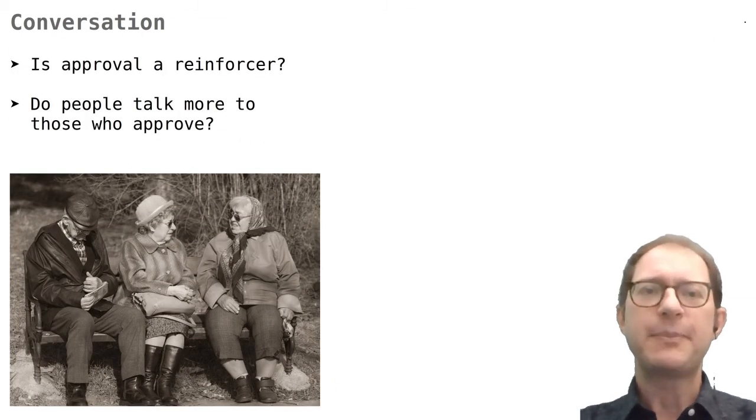Let's look at another example. Conger and Killeen asked whether we unconsciously direct our conversation to people that approve of what we say. They invited students to what looked like a discussion group on drug abuse, but in reality each student was seated with two confederates of the experimenters. The confederates were cued to randomly approve of what the students said. The conversations were videotaped, and later the experimenters looked at how much each student talked to the two confederates.